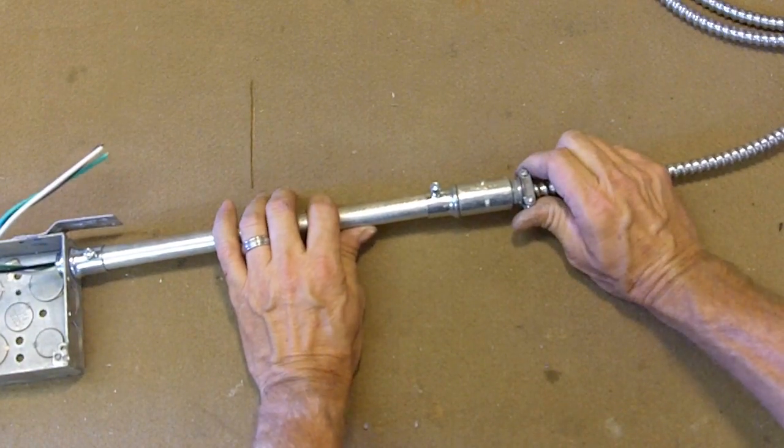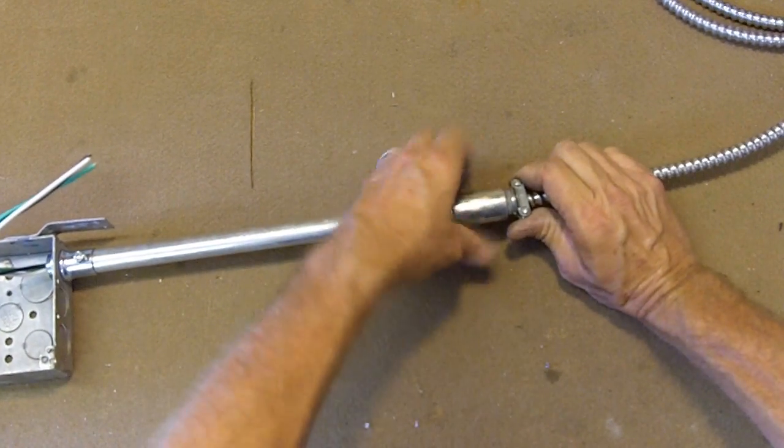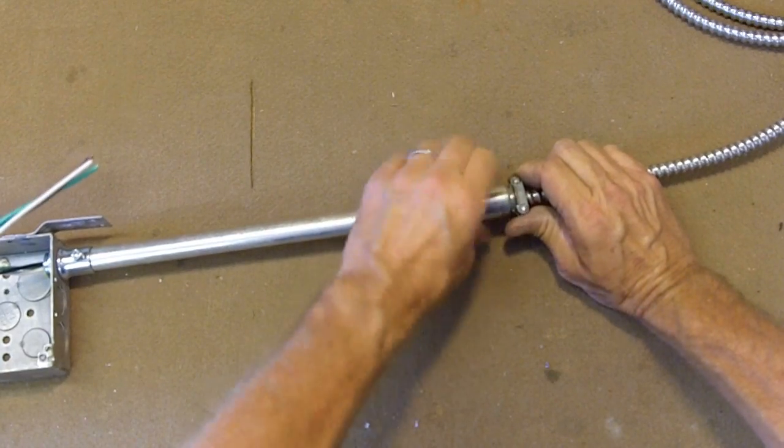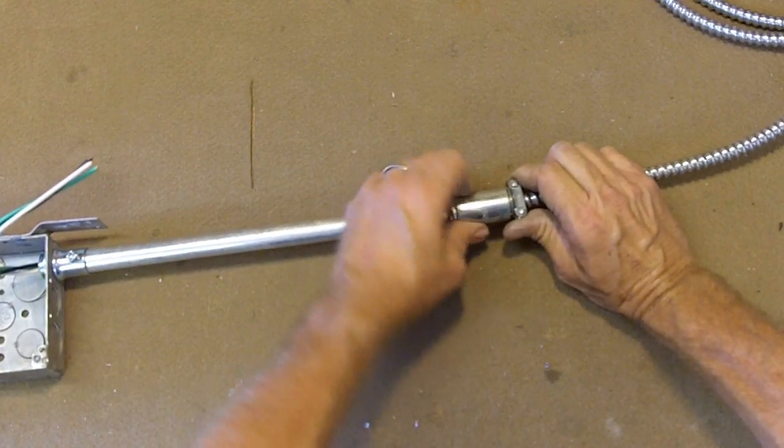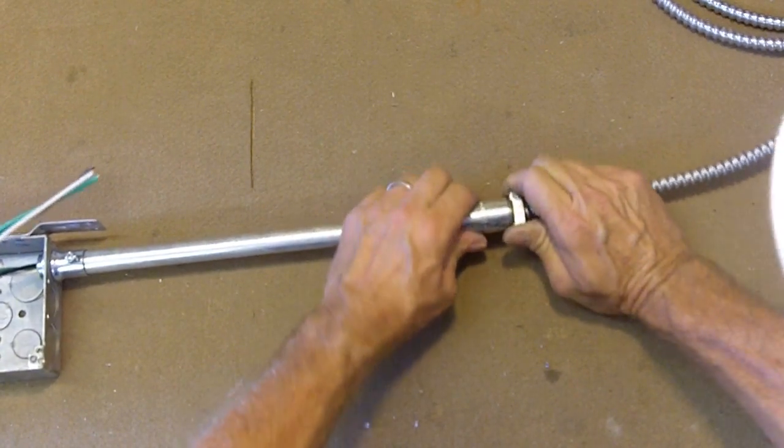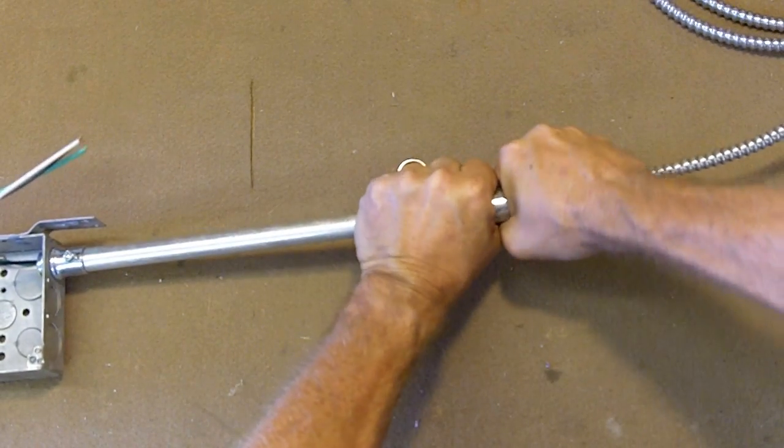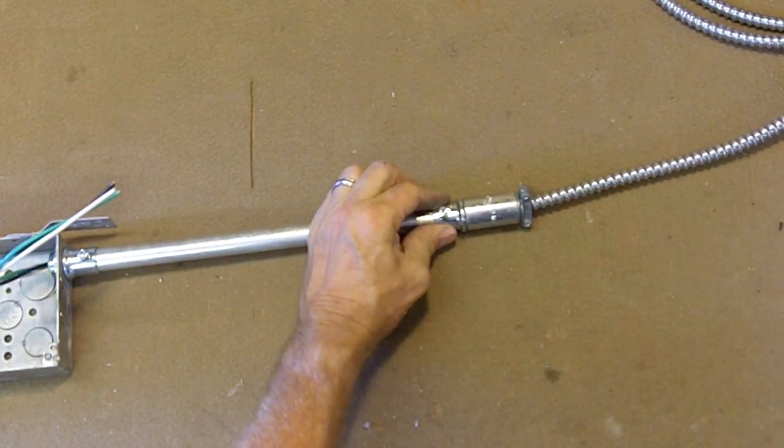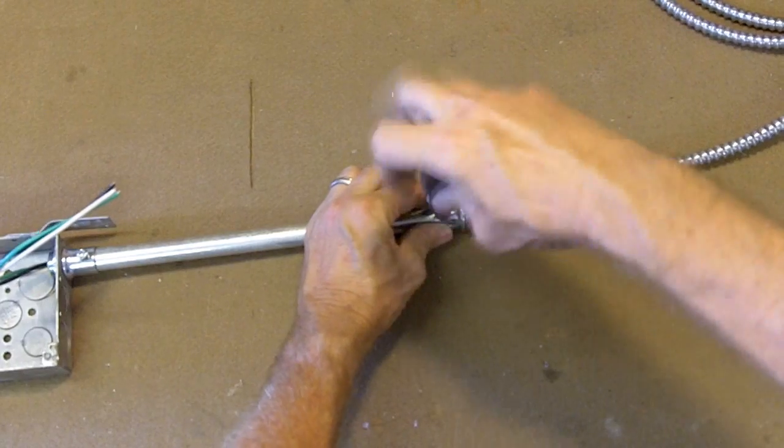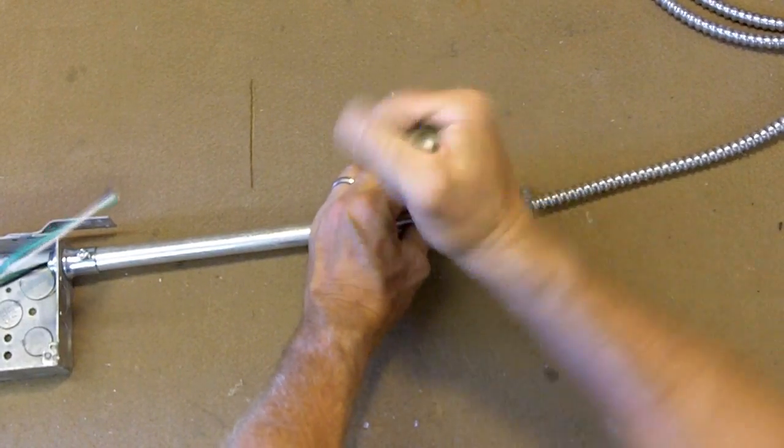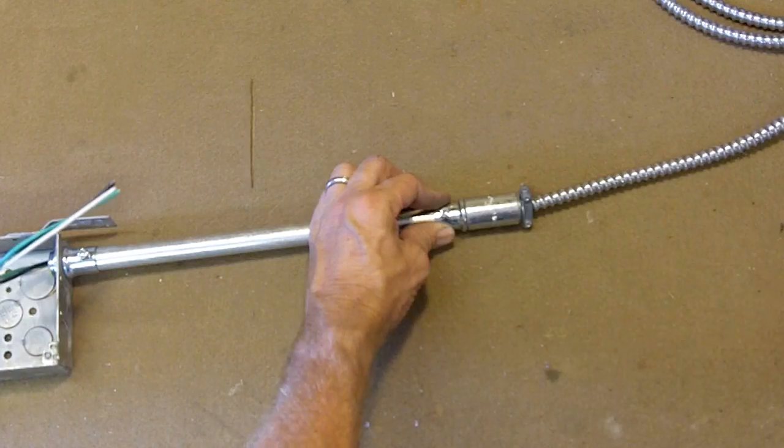And take this. And now you can turn this. Tighten that up. Good and snug. Now you can take your screwdriver or your reamer and tighten that up. And there you have it.